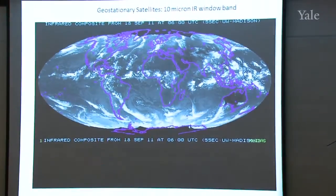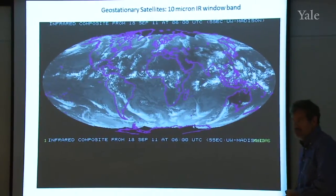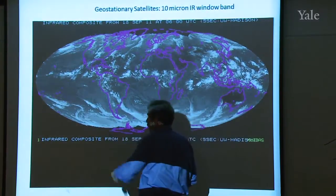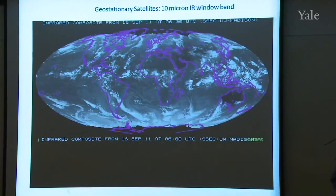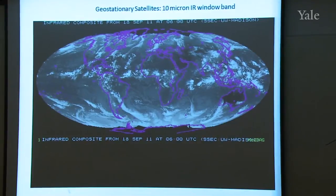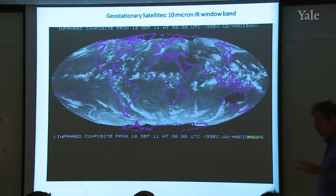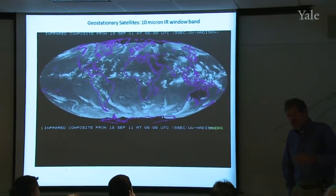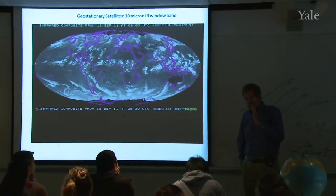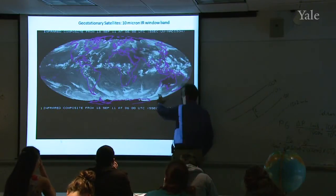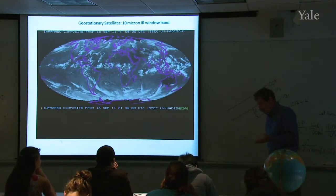We're not looking at reflected sunlight here. Notice that the full globe seems to be illuminated — there's always a day-side and a night-side, so you couldn't have that with reflected sunlight. We're looking at emitted radiation in the thermal infrared, the TIR. The wavelengths being used are roughly in the range of 8 to 12 microns. There happens to be an atmospheric window there, which allows those photons to move through the atmosphere without being strongly absorbed. So what we're seeing is the intensity of radiation emitted by the Earth reaching the satellite.